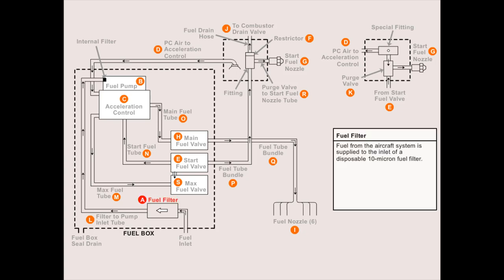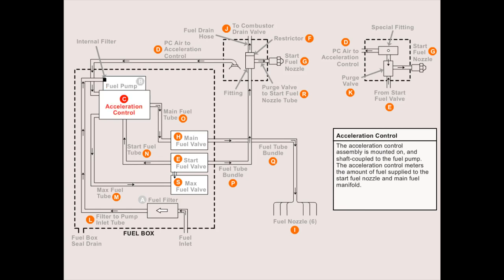Fuel from the aircraft system is supplied to the inlet of a disposable 10 micron fuel filter. The fuel pump is a positive displacement gear type pump. A wire mesh 25 micron filter is installed in the top of the pump housing.